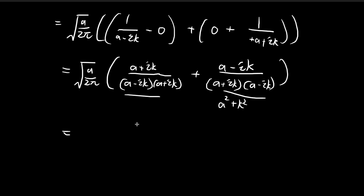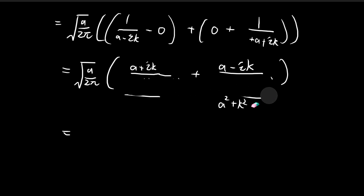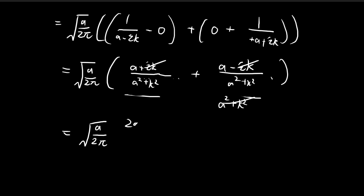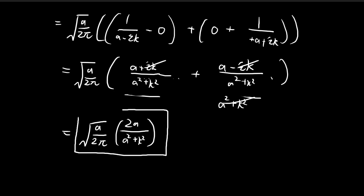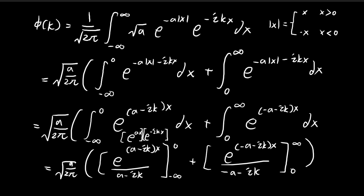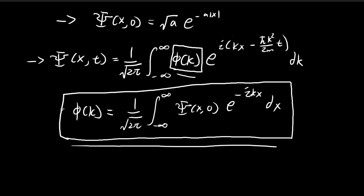Once both denominators are a² + k², the imaginary (ik) terms in the numerators cancel out. The final result is ξ(k) = √(a/2π) · 2a / (a² + k²). This is our ξ(k), and this result will be substituted back into the general free-particle wave function expression to obtain the full wave function.